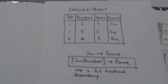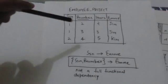See this employee-project relation. The primary key of this relation is a composite key made up of two attributes: SSN and P number.